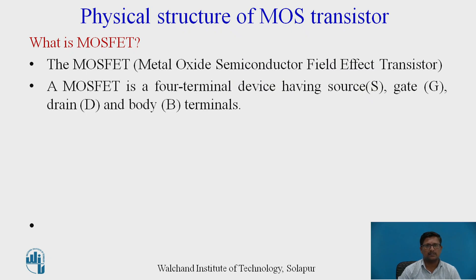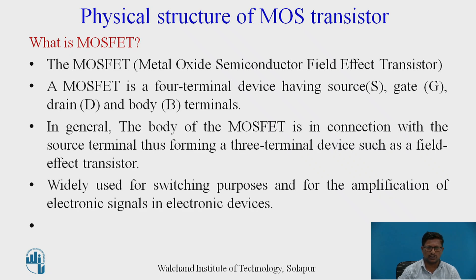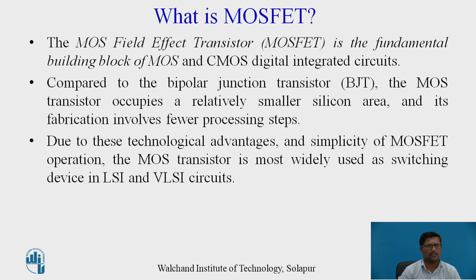A MOSFET is a metal oxide semiconductor field effect transistor. It is a four-terminal device having source, gate, drain, and body. Generally the body is attached to the source, forming a three-terminal device like a field effect transistor. MOSFET is widely used for switching purposes and amplification of electronic signals. It is the fundamental building block of MOS and CMOS digital integrated circuits. Compared to the BJT, the MOS transistor occupies a relatively smaller silicon area and its fabrication involves fewer processing steps, making it the most widely used switching device in LSI and VLSI circuits.